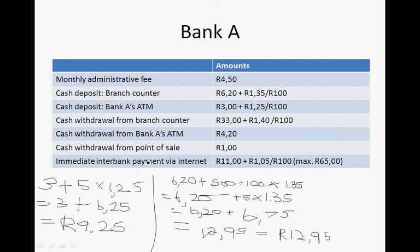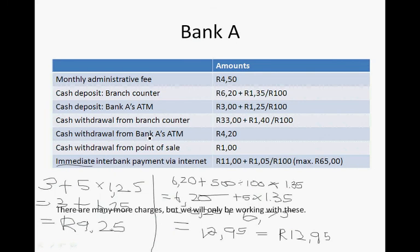For an immediate internet payment, if you make a payment via the internet, you will pay R11.00 plus R1.05 for every R100, up to a maximum of R65.00. This is an immediate payment, meaning the money clears immediately and doesn't take a couple of days.